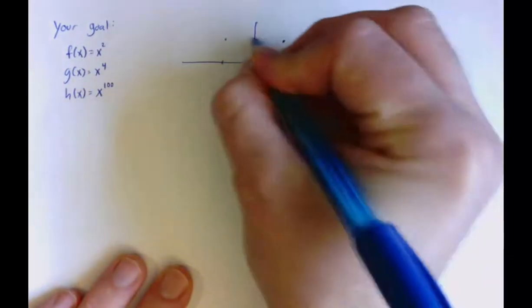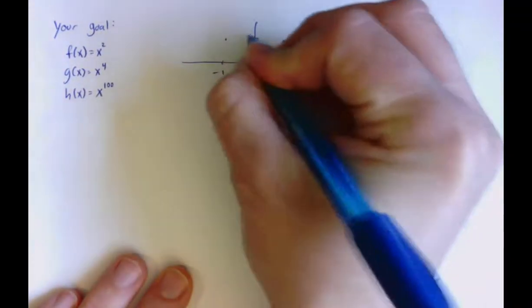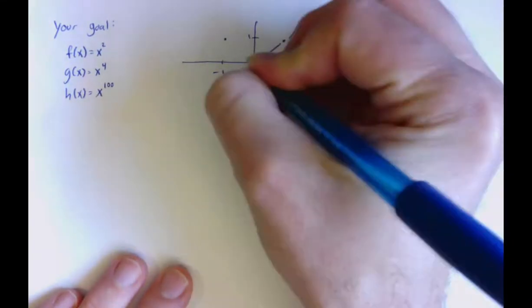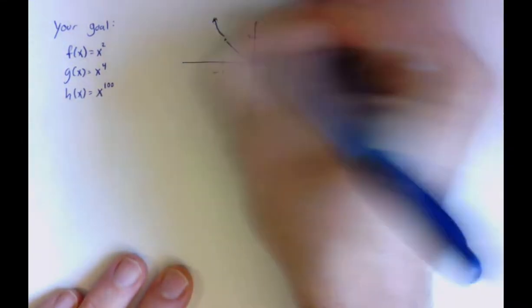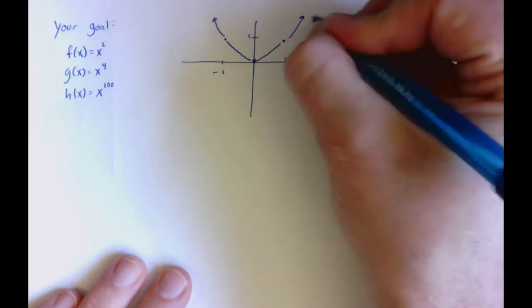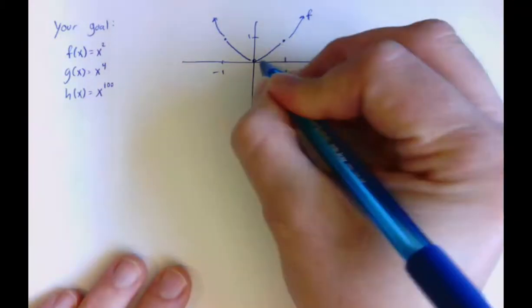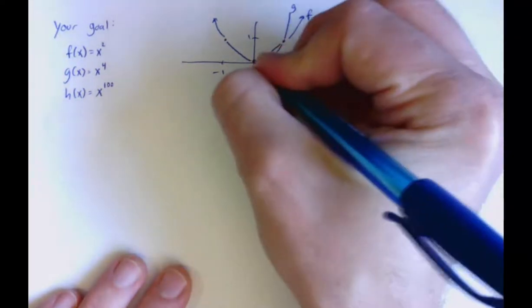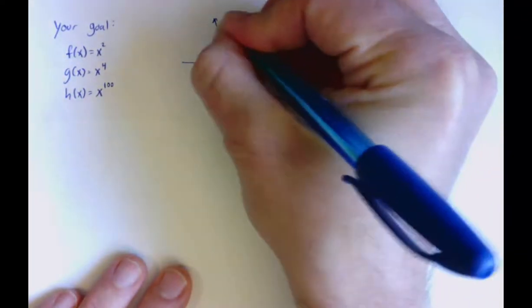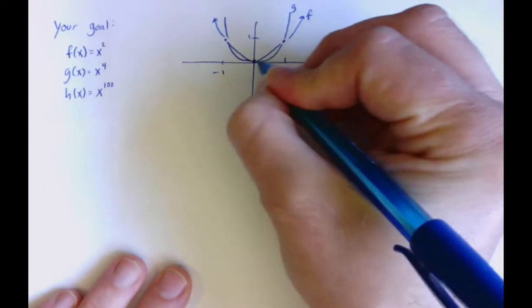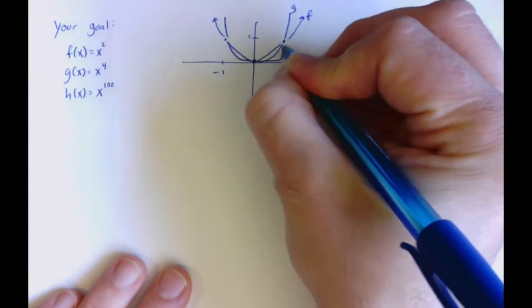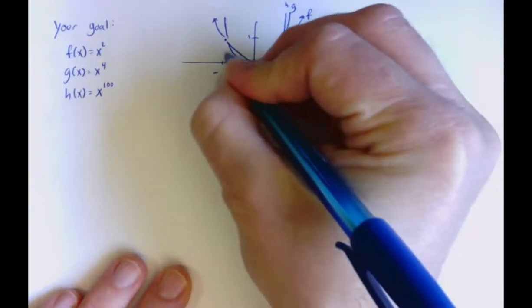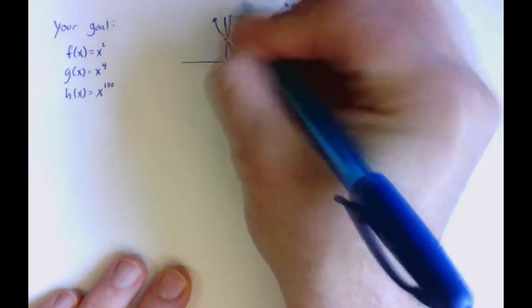Realize what the key features are. And draw a somewhat careful sketch, but one that really reveals some of the key features. So, that's the f function. That would be the g function. And then, the h function would grow very, very quickly after one.